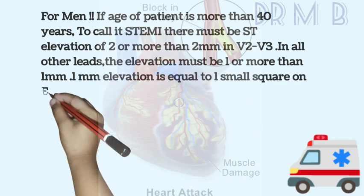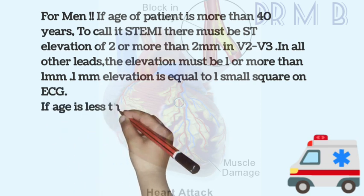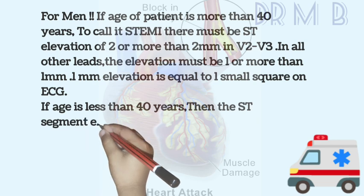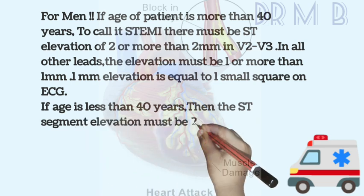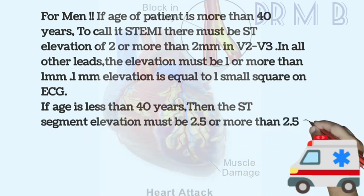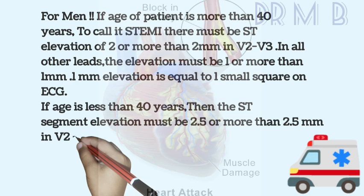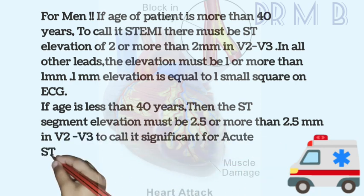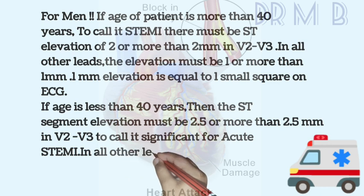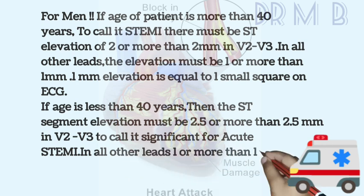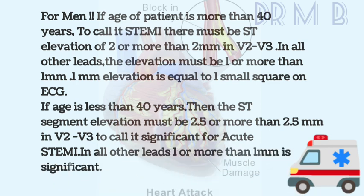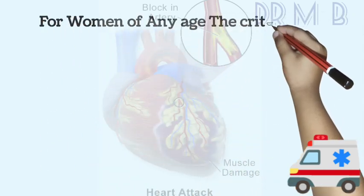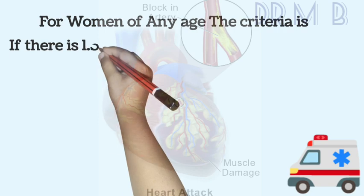One mm elevation is equal to one small square on ECG. If age is less than 40 years, then the ST segment elevation must be 2.5mm or more in V2 to V3 to call it significant for acute STEMI. In all other leads, 1mm or more than 1mm is significant. For women of any age, the criteria is: